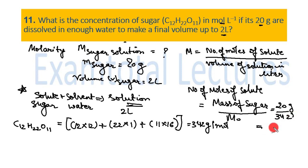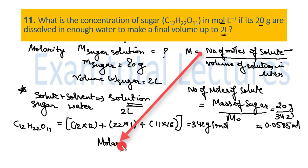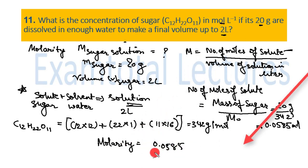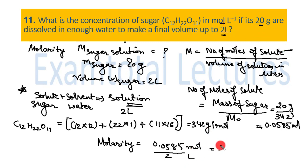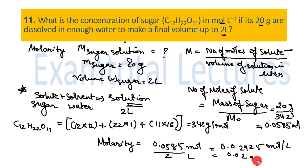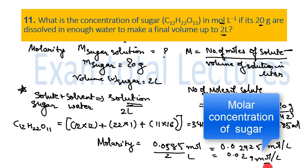Mass of sugar = 20 grams. Number of moles = 20 / 342 = 0.0585 moles. Now molarity = 0.0585 / 2 liters. Units are moles per liter, which is what the question requires. The final answer is 0.02925 moles per liter, or rounded to 0.029 mol/L.